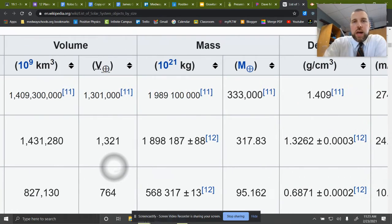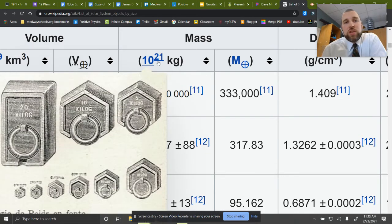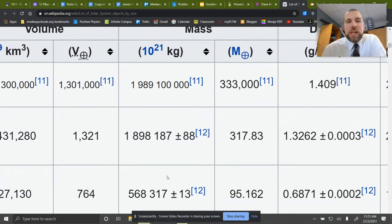Volume we're not going to need, but mass is going to be useful. So this is given in 10 to the 21st kilograms. 10 to the 21st kilograms. So we have 1,898,187 times 10 to the 21st kilograms. And I think they just did this so it's the common unit throughout. So you can kind of compare to each. But again, that's the uncertainty. Don't worry about that. You can take this mean value and work with that.